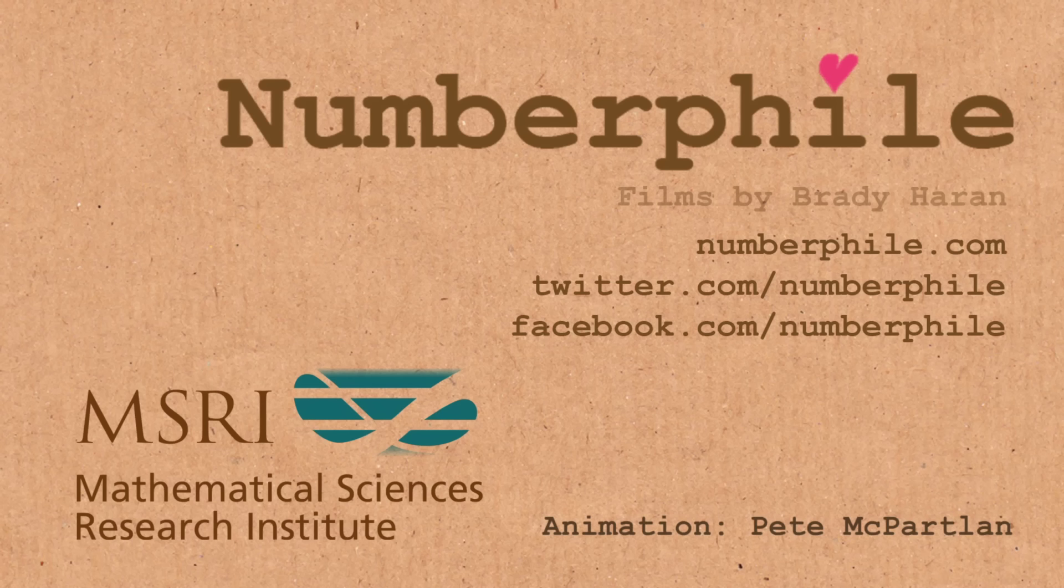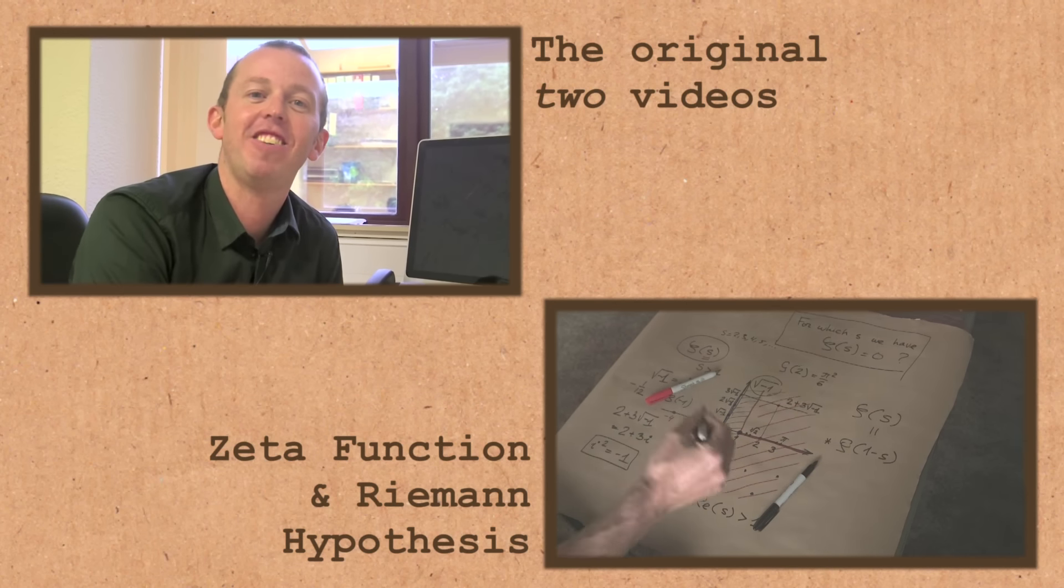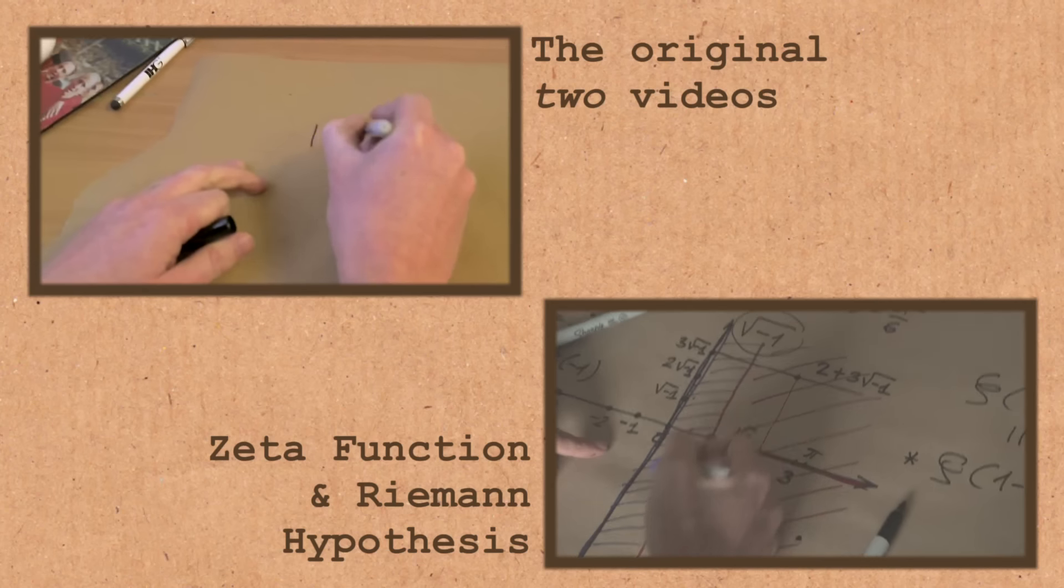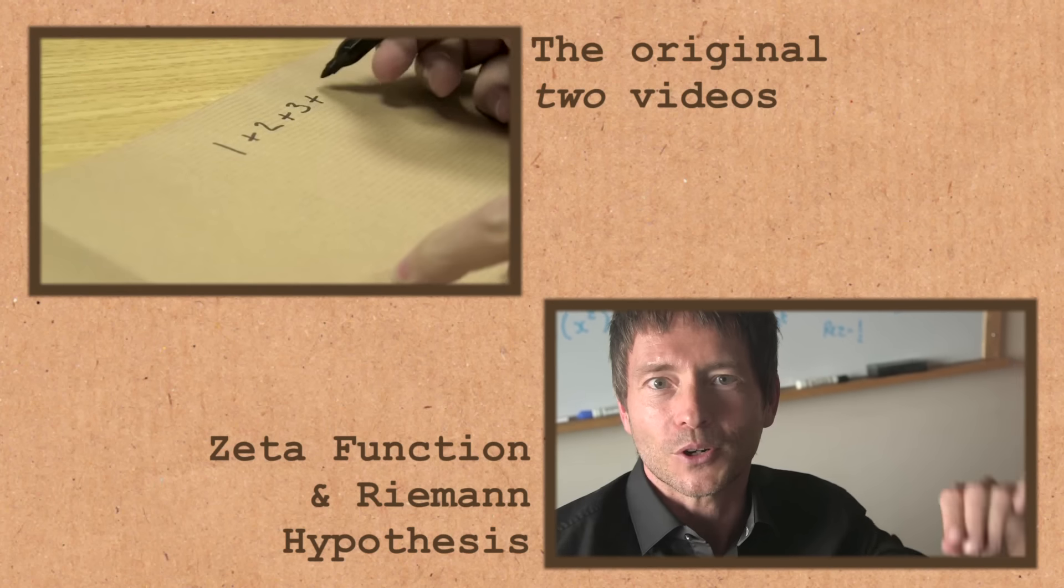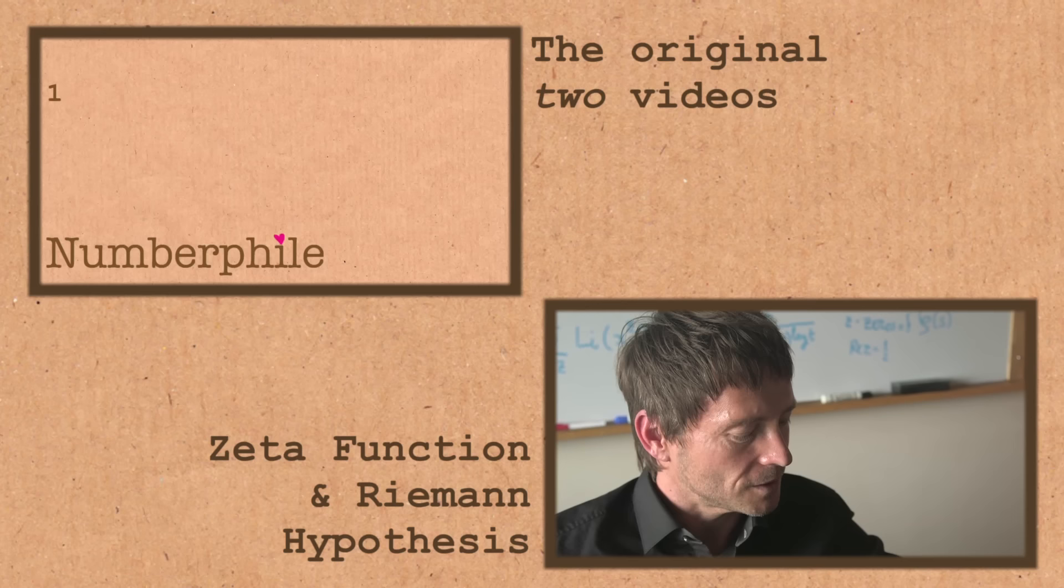For now, our understanding is that minus 1 over 12 is this sort of golden part, is this sort of finite part in this infinite lump, which you get by throwing away some infinite dirt. I'm going to give you an astounding result. An astounding result. So I'm just going to write down a little sum, and we're just going to see what answer it gives. 1 plus 2 plus 3 plus 4 and so on.